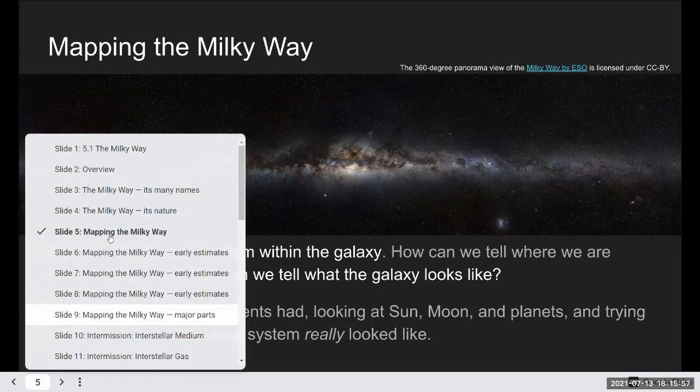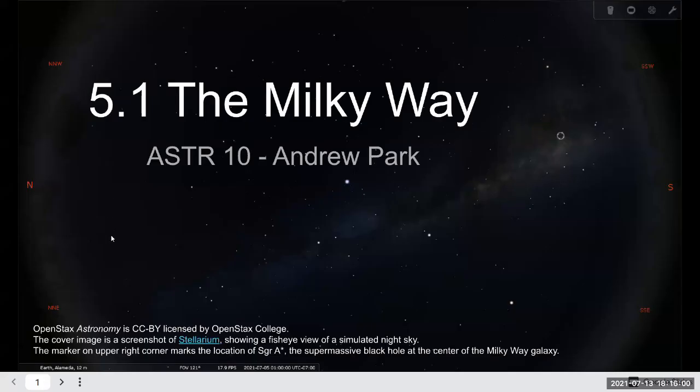So with that theme in mind, I just want you to kind of flip through a good chunk of the slide. For most of them, I'll just be flipping through other than to maybe explain where this come from. This is a screenshot from Stellarium. I zoomed out so that you can see most of the sky in this one view. It's a fisheye view basically. And this marker is placed at the location of what's called the Sagittarius A star. That's the supermassive black hole at the center of our galaxy.